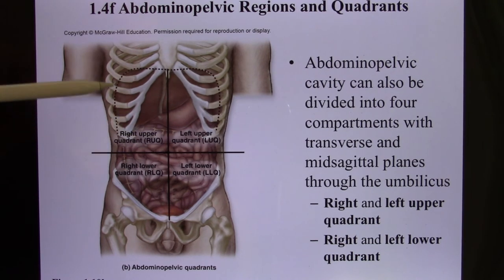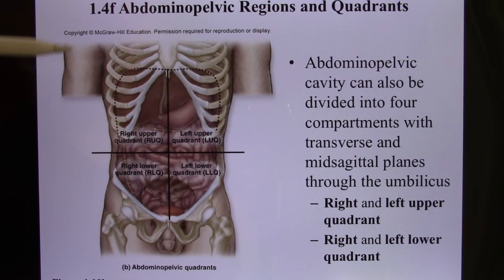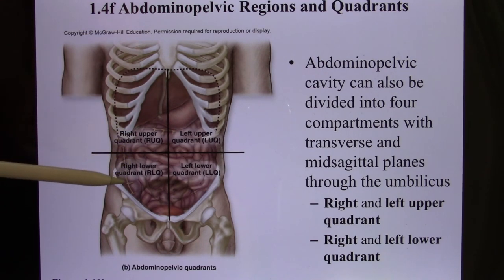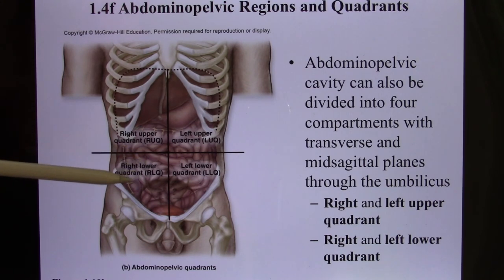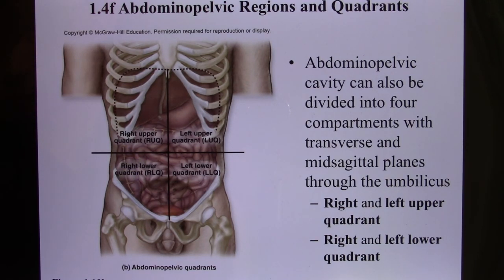I can give you an organ and ask what quadrant it's in. Your appendix is in your right lower quadrant. So you have four quadrants and nine regions, and this part goes hand in hand with your lab.